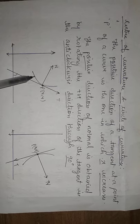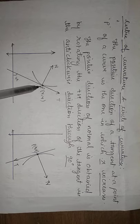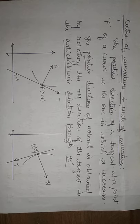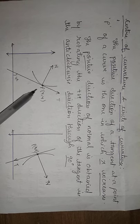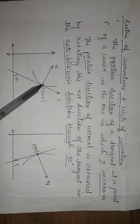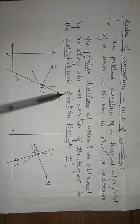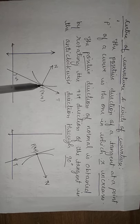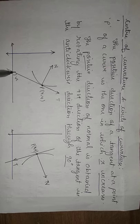The curve is going on increasing. Suppose I consider a point P on this curve and draw a tangent. Since the curve is increasing and the values are getting increased, the tangent drawn at point P in this manner is taken as the positive direction of the tangent. If the x values are decreasing, then the other side is taken as the negative direction of the tangent.